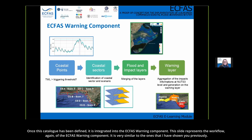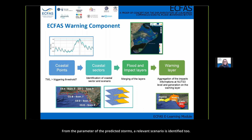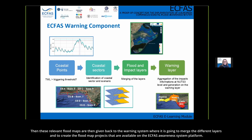Once the catalogue was defined, it was integrated into the ECFAS warning component. This slide shows the workflow again: water level time series are checked at every coastal point; if the total water level exceeds the triggering threshold, the coastal sectors of interest are identified based on where coastal points were triggered; the relevant scenario is identified from the storm parameters; and the relevant flood maps are returned to the warning system, which merges the different layers to create flood map products available on the ECFAS awareness system platform.